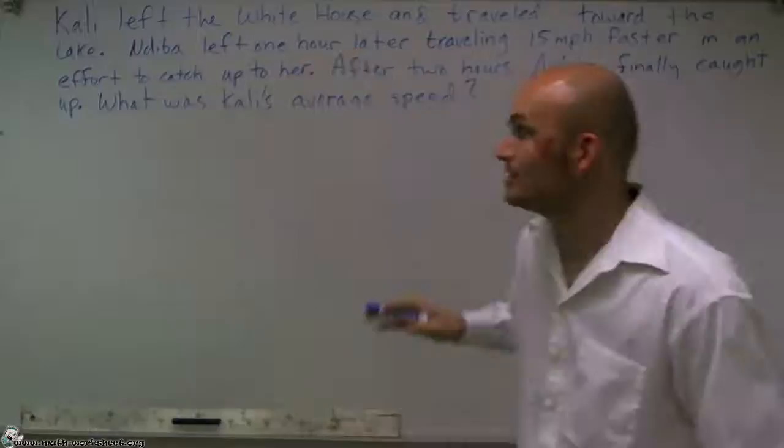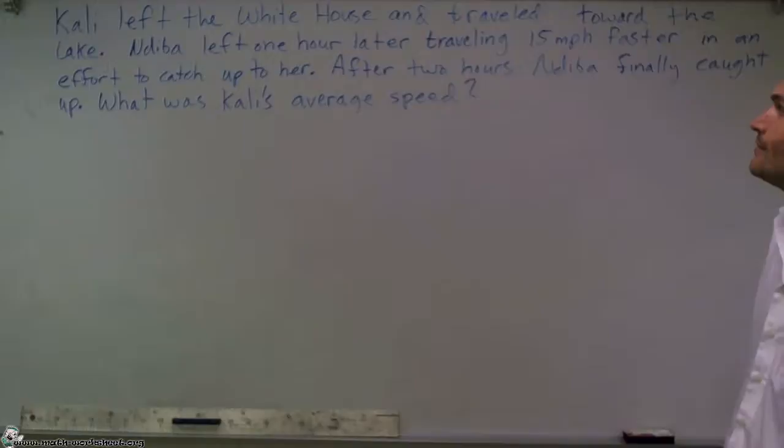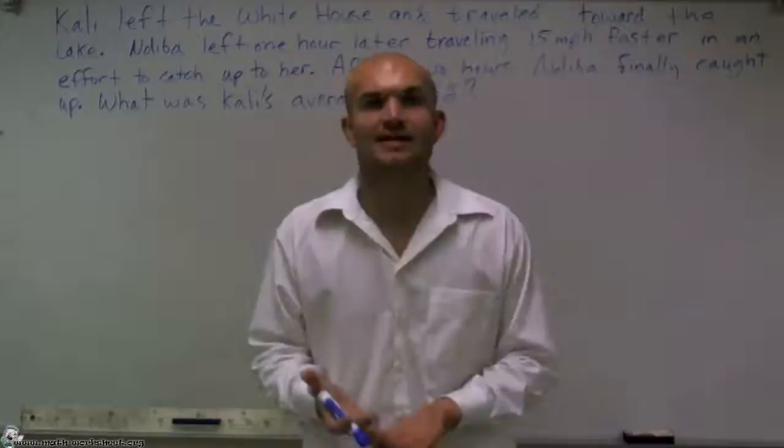Welcome. What I'd like to do is show you how to solve this distance rate problem. The problem reads: Callie left the White House and traveled toward the lake. Nadeeba left one hour later traveling 15 miles per hour faster in an effort to catch up with her. After two hours, Nadeeba finally caught up. What was Callie's average speed?